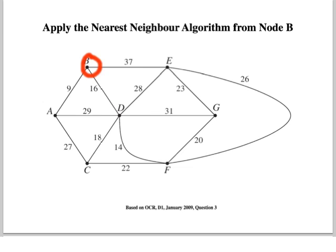So we look at the weights: we've got 9, 16, 37. So we do the 9. We're at node A, and we've got 29, 27. So we take the least, and we continue just as before. So we're at C, and we've got a choice of 18 and 22. So that takes us up to D.